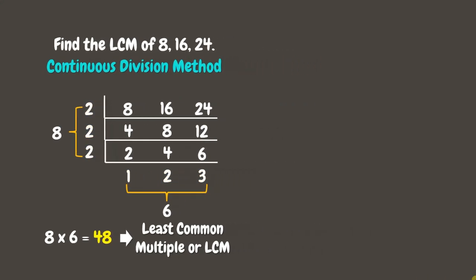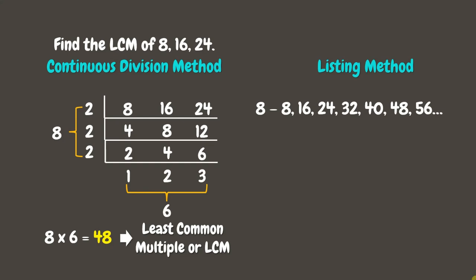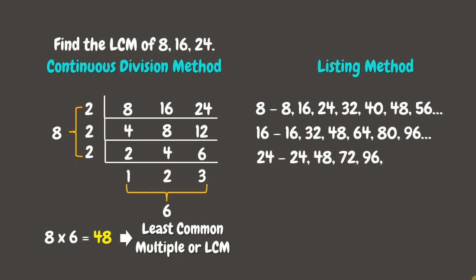Now, to check, we can use the listing method. Let us list down all the multiples of 8, 16, and 24. For multiples of 8, we have 8, 16, 24, 32, 40, 48, 56, and so on. For multiples of 16, we have 16, 32, 48, 64, 80, 96, and so on. While for the multiples of 24, we have 24, 48, 72, 96, and 120. We can see that the least common multiple is indeed 48.